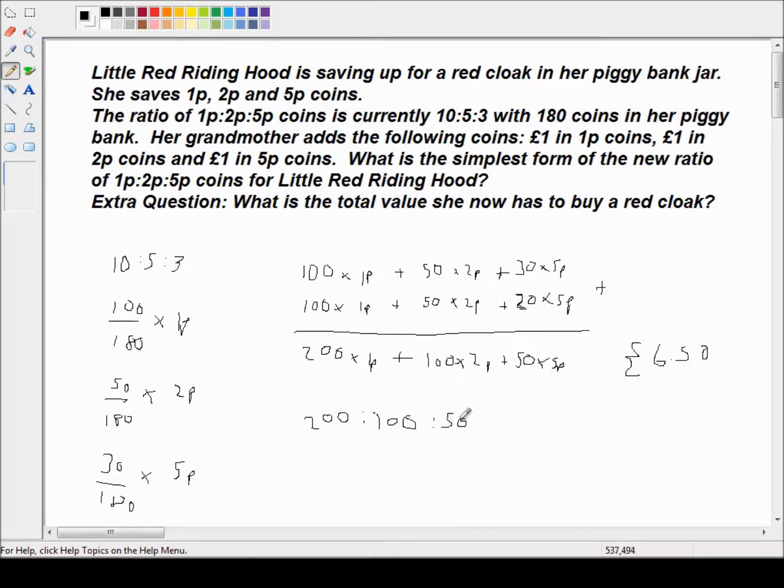And all we want to do now is simplify this and put this in its simplest form. Well, I think everything here is a multiple of 50. So I'm just going to cancel everything down by 50. So this is 50 divided by 50 is 1. 100 divided by 50 is 2. And 200 divided by 50 is 4. So the ratio is 4 to 2 to 1.